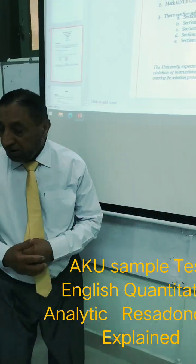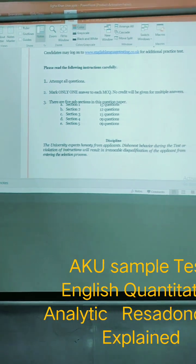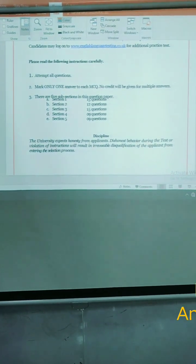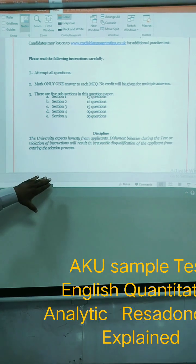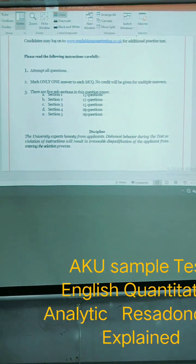The negative marking is in the science section. So there are five subsections in this question paper and they have one, two, three, four and there are question numbers.